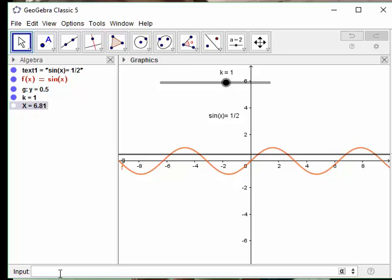And then I'm going to plot the point capital X comma sine of capital X, and we see that it goes to one of the solutions.